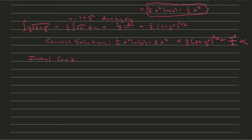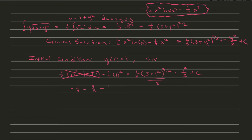The initial value for this problem is y(1) = 1. Plugging in x=1 and y=1, the first term cancels because ln(1)=0, leaving us with -1/4 equal to 8/3 plus 1/2 plus C. Solving, we find that C equals -41/12.